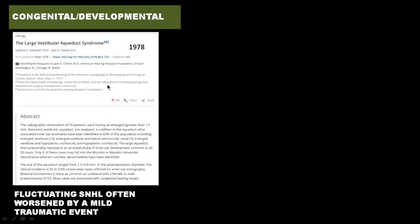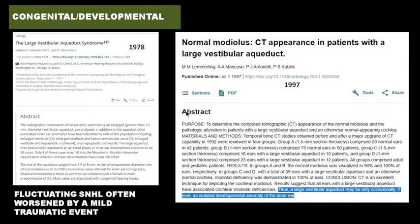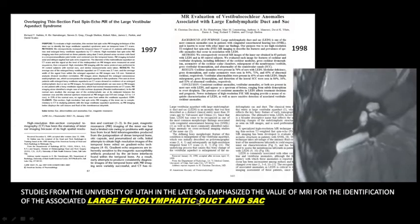Dr. Valvasori described 50 patients with a large vestibular aqueduct, many of whom had fluctuating sensorineural hearing loss worsened by a mild traumatic event. He coined the term the large vestibular aqueduct syndrome. Approximately 20 years later, a group from Gainesville examined similar patients and found that each and every patient had an abnormal modiolus, and further concluded that a large vestibular aqueduct may only occasionally, if ever, be an isolated developmental anomaly. Studies from the University of Utah in the late 90s emphasized the value of MRI for identifying the associated large endolymphatic duct and sac.